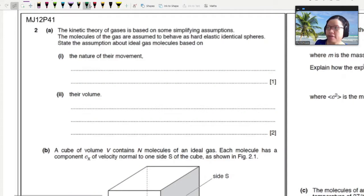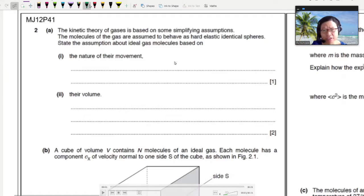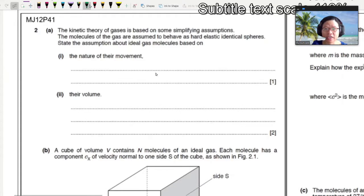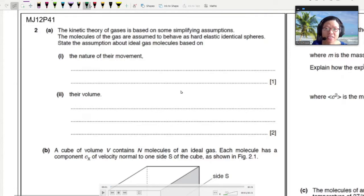Okay, this is another example involving the kinetic theory of gases. In the beginning, you are shown that the kinetic theory of gases is based on some simplifying assumptions. Don't forget there are four assumptions. The molecules of the gas are assumed to behave as hard, elastic, identical spheres.